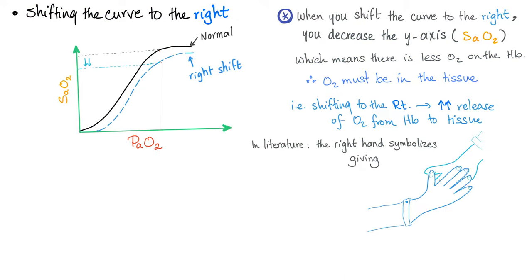Shifting the curve to the right: take a constant amount of PaO2 and go up the curve. The blue curve has less oxygen saturation than the black one. When we shift the curve to the right, we are decreasing the oxygen saturation — meaning oxygen is leaving the hemoglobin and going into the tissue. With a right shift, you are giving oxygen to the tissue.